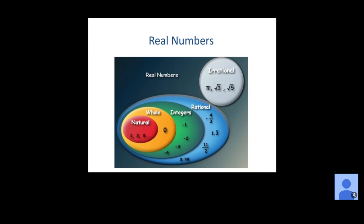Real numbers include both irrational numbers and rational numbers. When we talk about rational numbers, we're saying anything that can be written as a fraction. In the blue bubble, all of these numbers could be written as a fraction, therefore they are considered rational numbers.